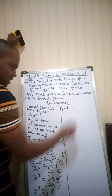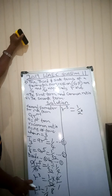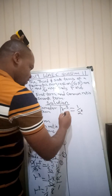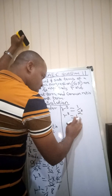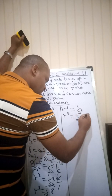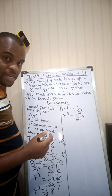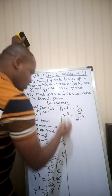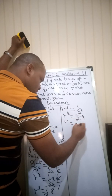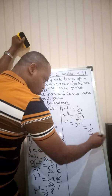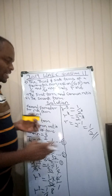We can write 1/8 as 1/2³, which equals 2^(-3). So r³ = 2^(-3). The powers of 3 cancel, giving r = 2^(-1), which is the same as 1/2. So our common ratio r = 1/2.